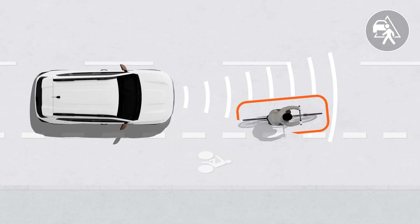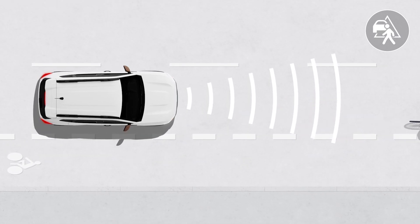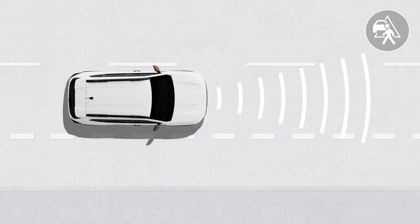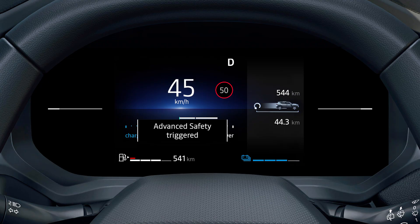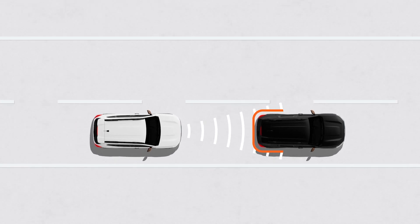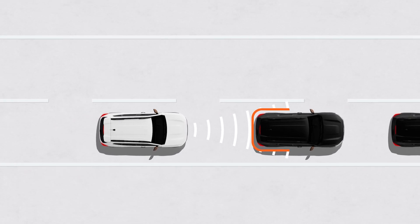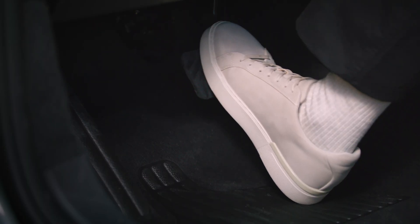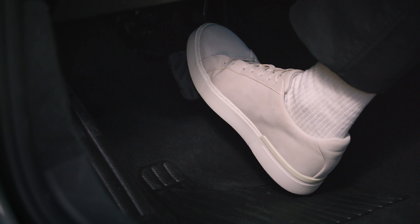If the danger is imminent, the audible warning and emergency braking may occur simultaneously. After any braking activation by the system, the message 'advanced safety triggered' will be displayed. In the case of a complete halt, the system ceases to apply the brakes. If necessary, you must depress the brake pedal to keep the vehicle stationary.